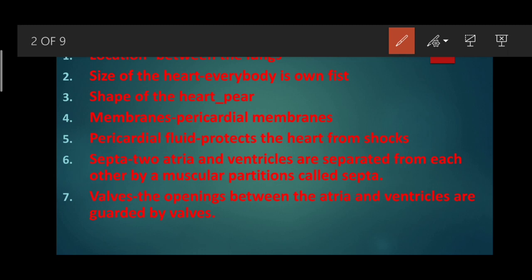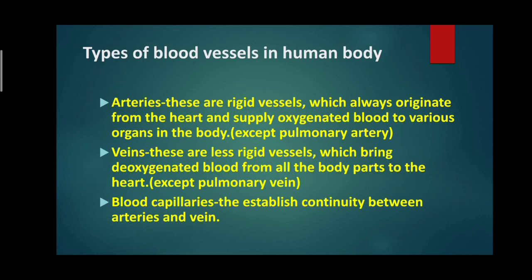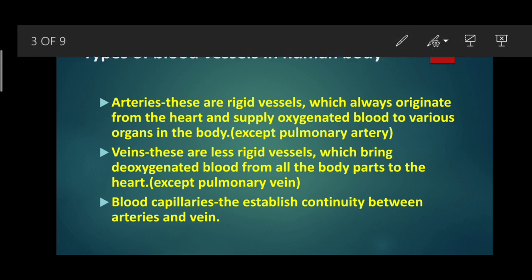The openings between the atria and ventricles are guarded by valves. Before learning about the internal structure of the heart, the types of blood vessels are also very important. In the human body there are many blood vessels, but based on their function they are categorized into three types: arteries, veins, and blood capillaries. Any blood vessel that supplies blood from the heart to other body parts is called an artery. Arteries always arise from the heart. Any blood vessel that brings blood to the heart from various body parts is called a vein.